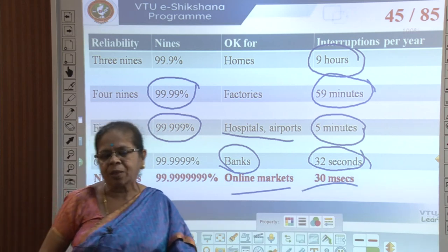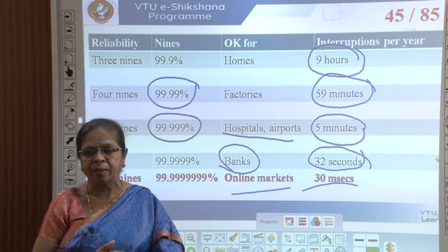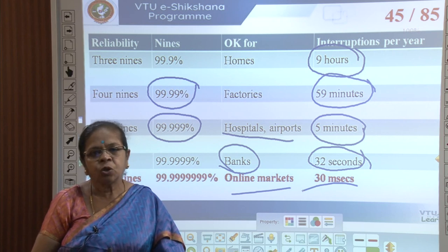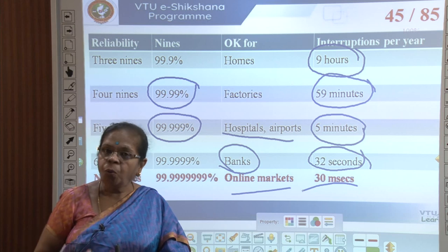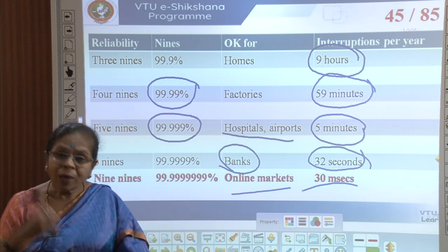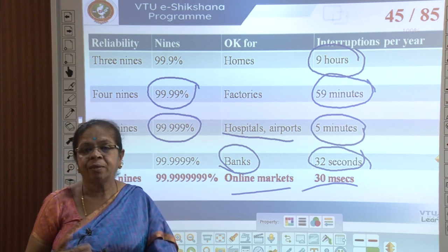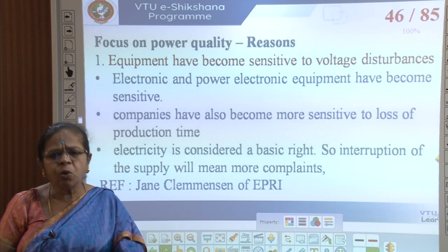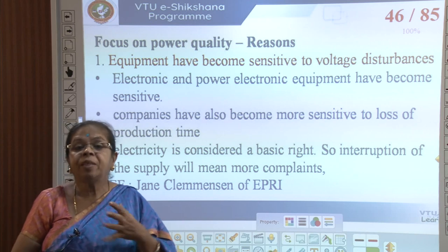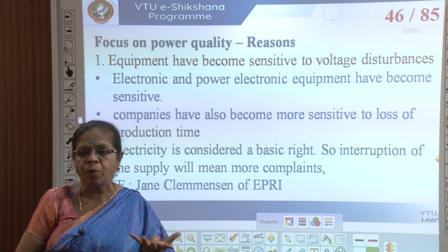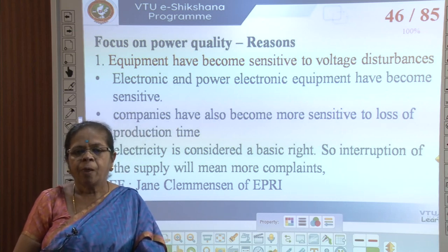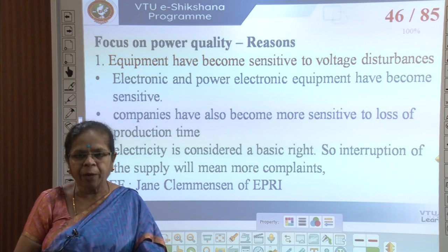The power in stock exchanges must be of very high quality because of online trading — many people are bidding for stocks simultaneously with algorithms running, so they cannot afford power disruption. With increasing sophistication in technology, quality has become a major issue because equipment cannot tolerate disruption. Equipment has become sensitive to voltage disturbances because of power electronic equipment, digital equipment using microprocessors, microcontrollers, and other digital devices.